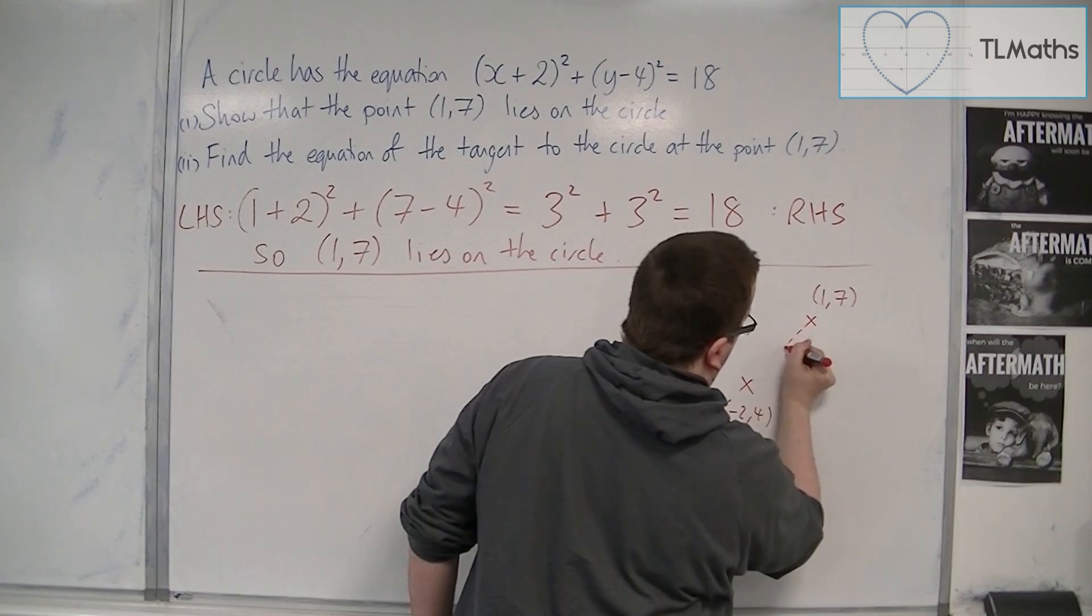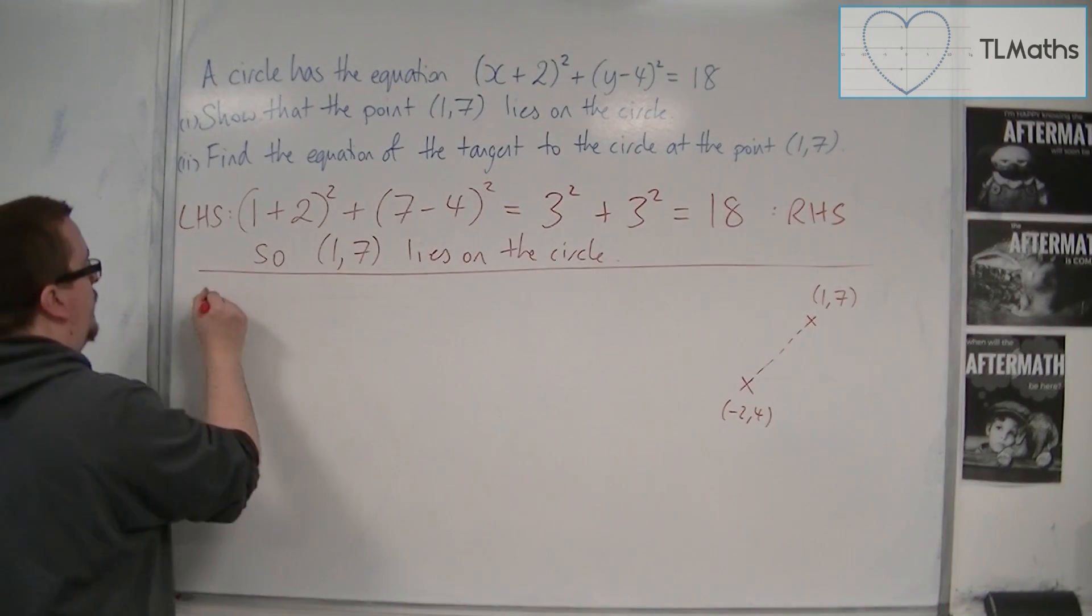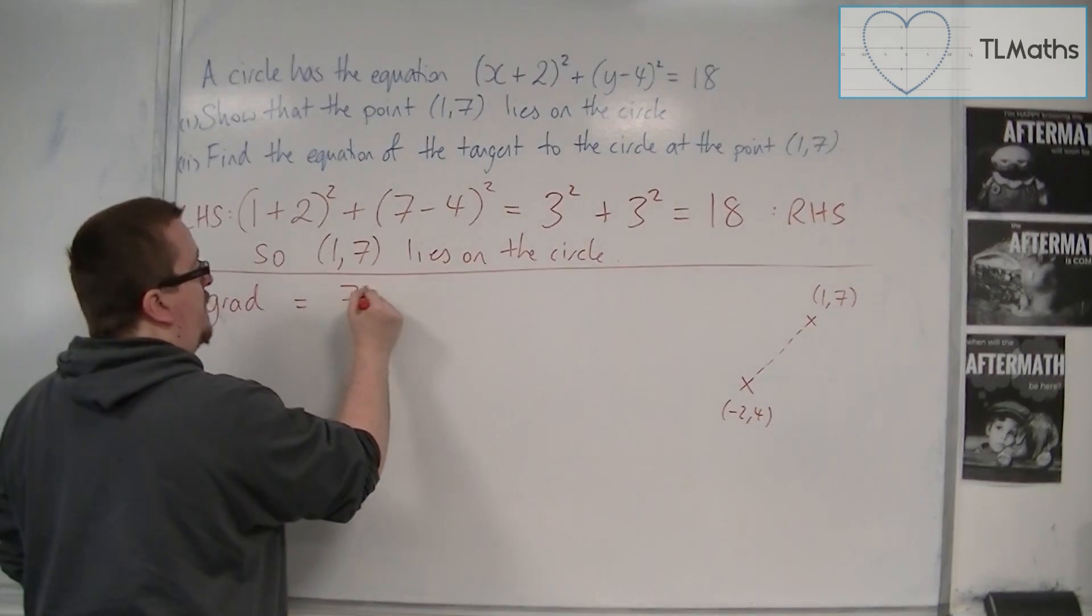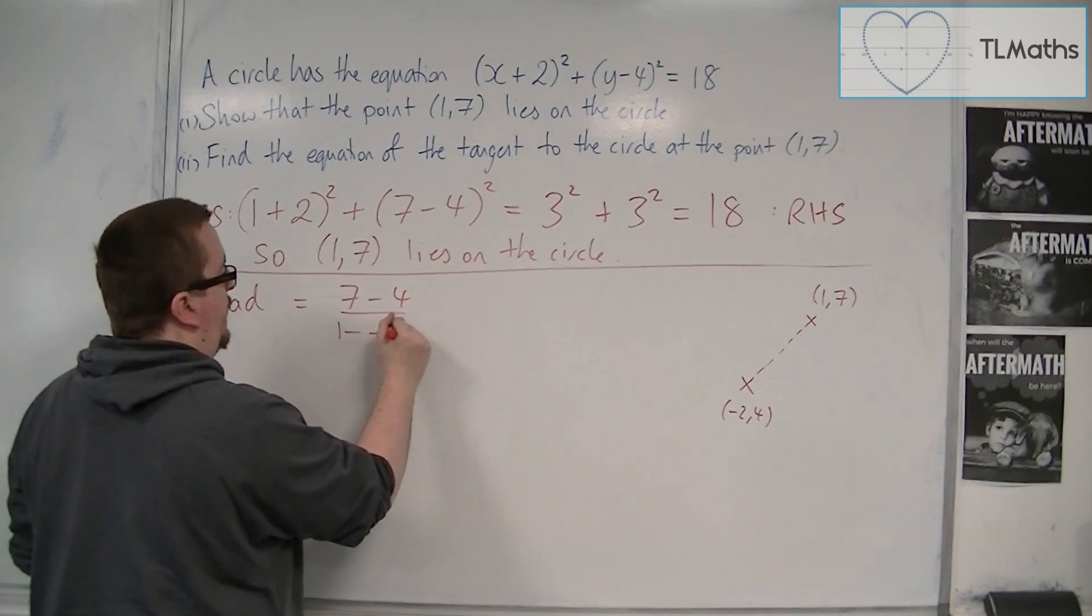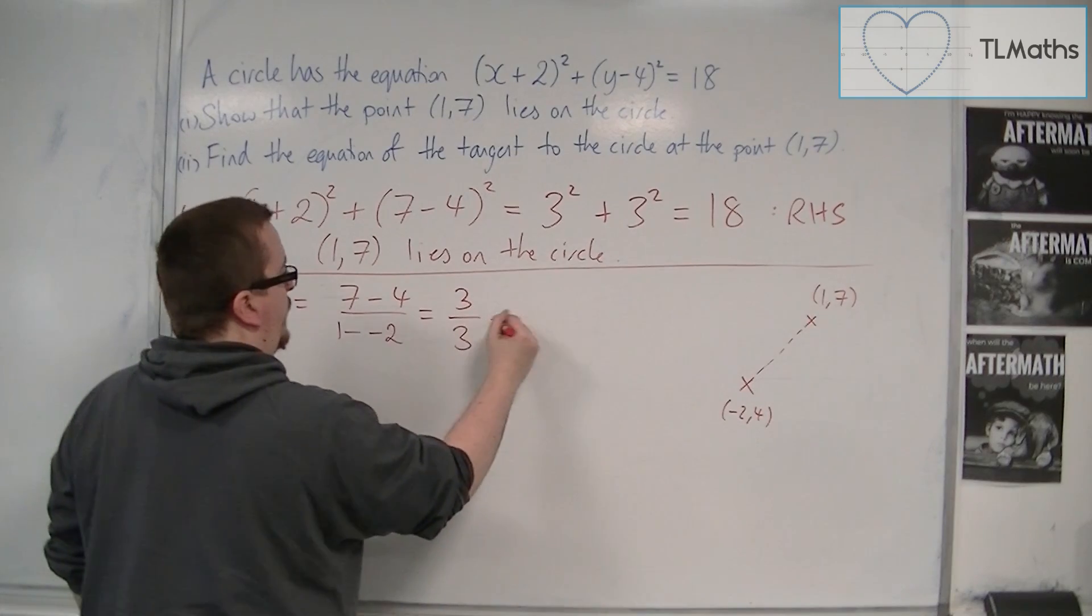Okay, now what we're going to do is we're going to find the gradient between those two points. So the gradient that we're looking for is (7 - 4) over (1 - (-2)). So we've got 3 over 3, and so that's 1.